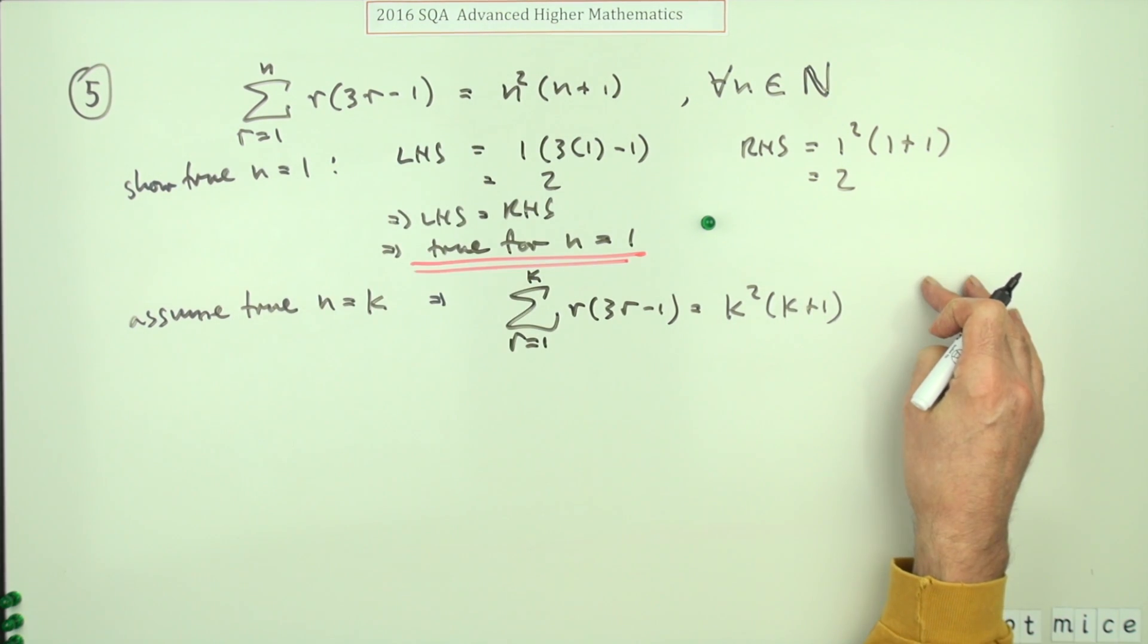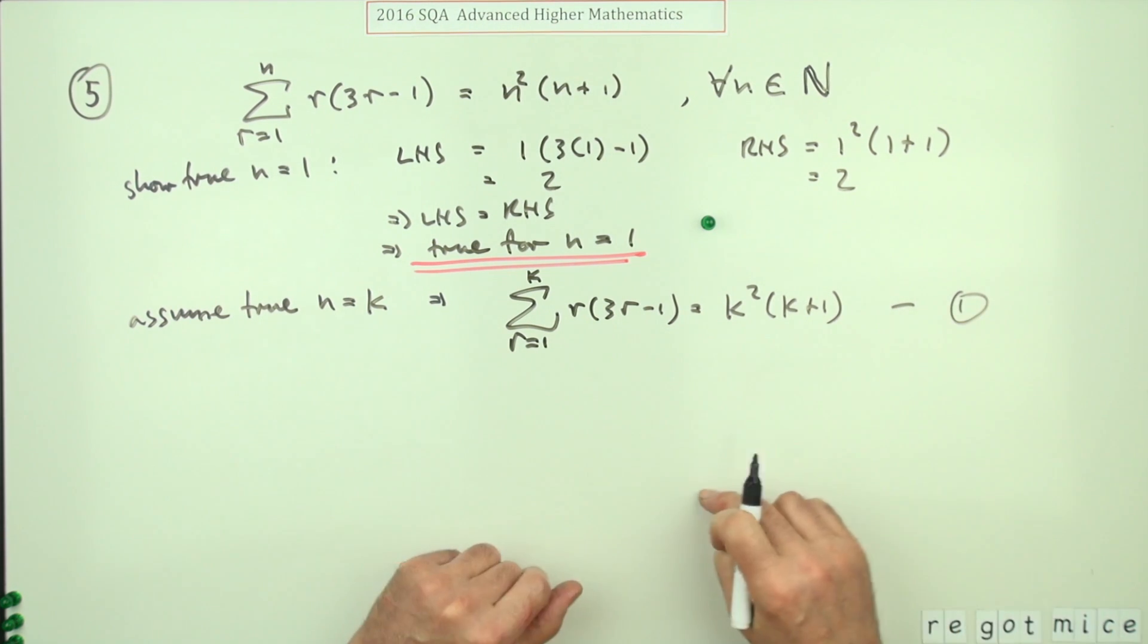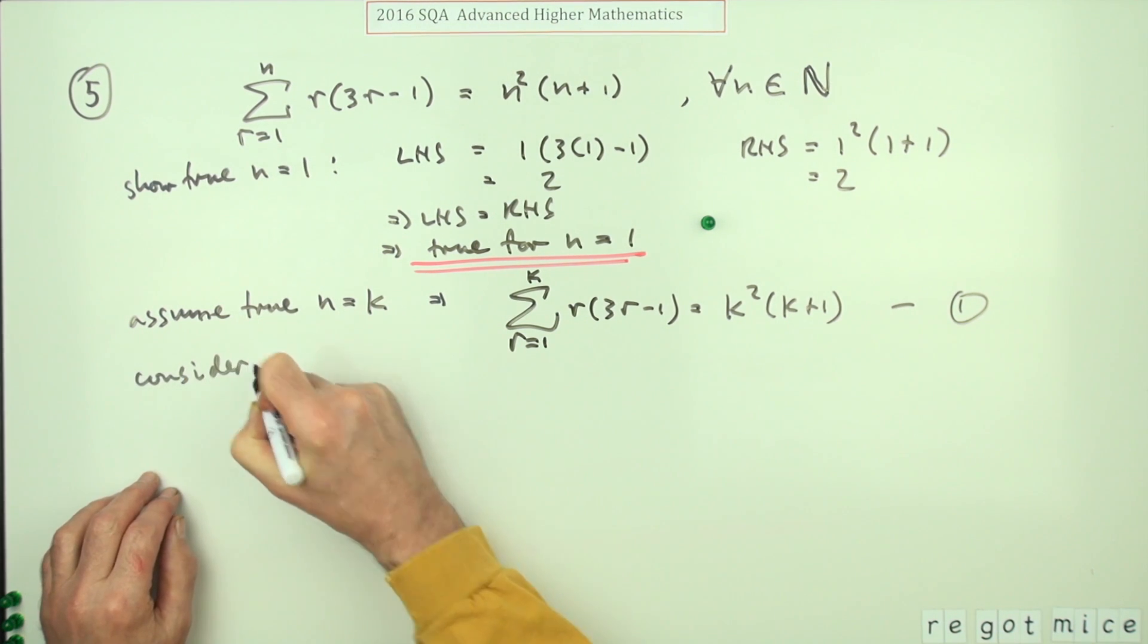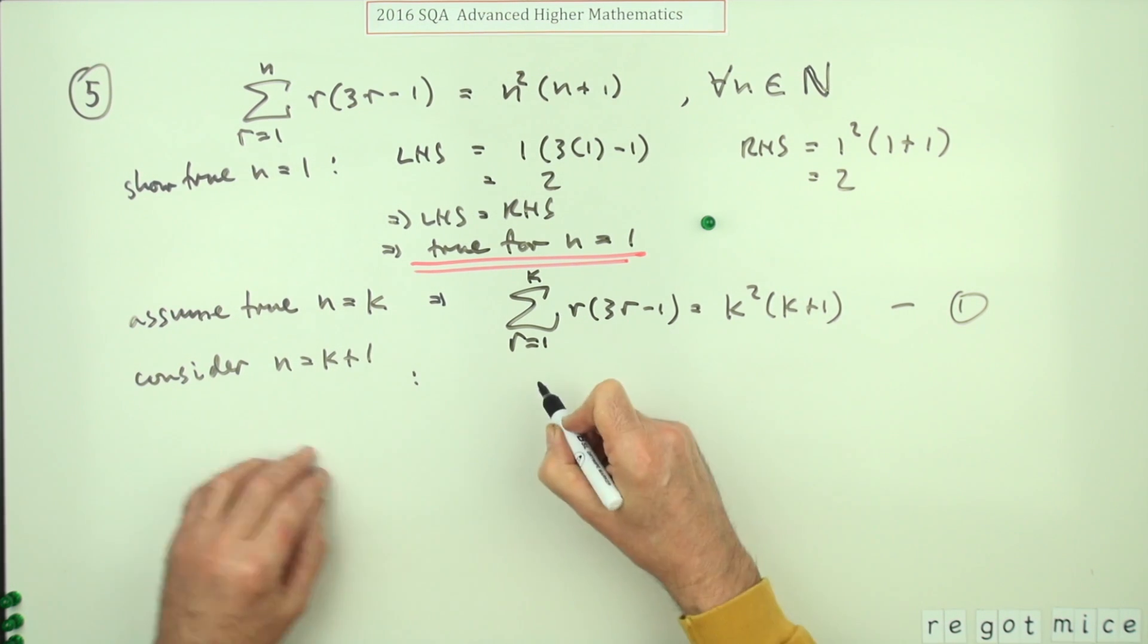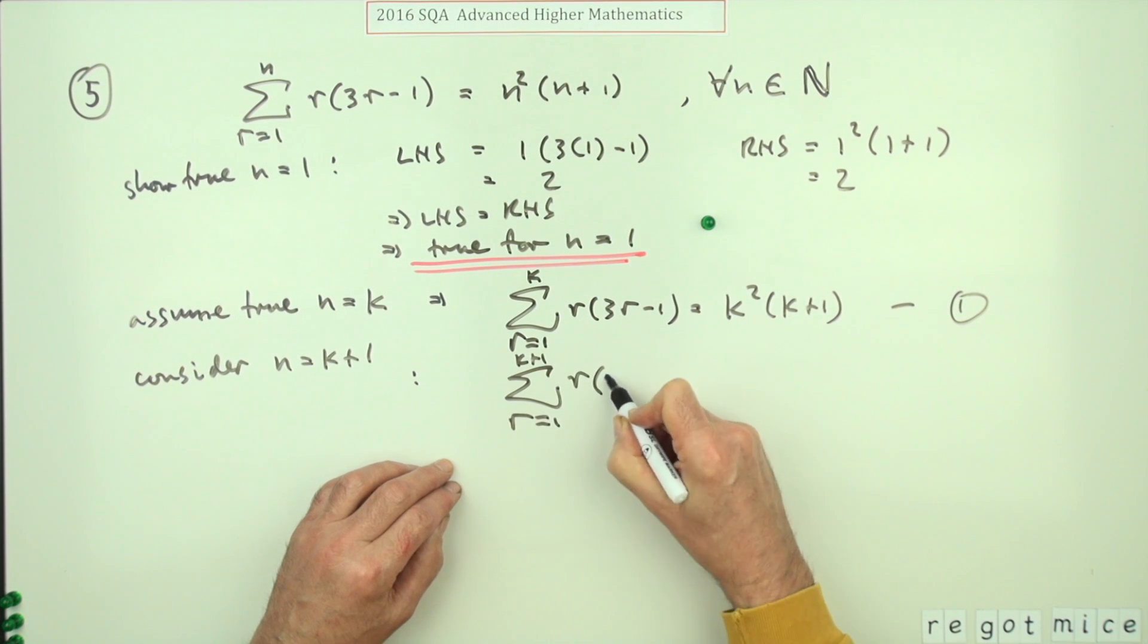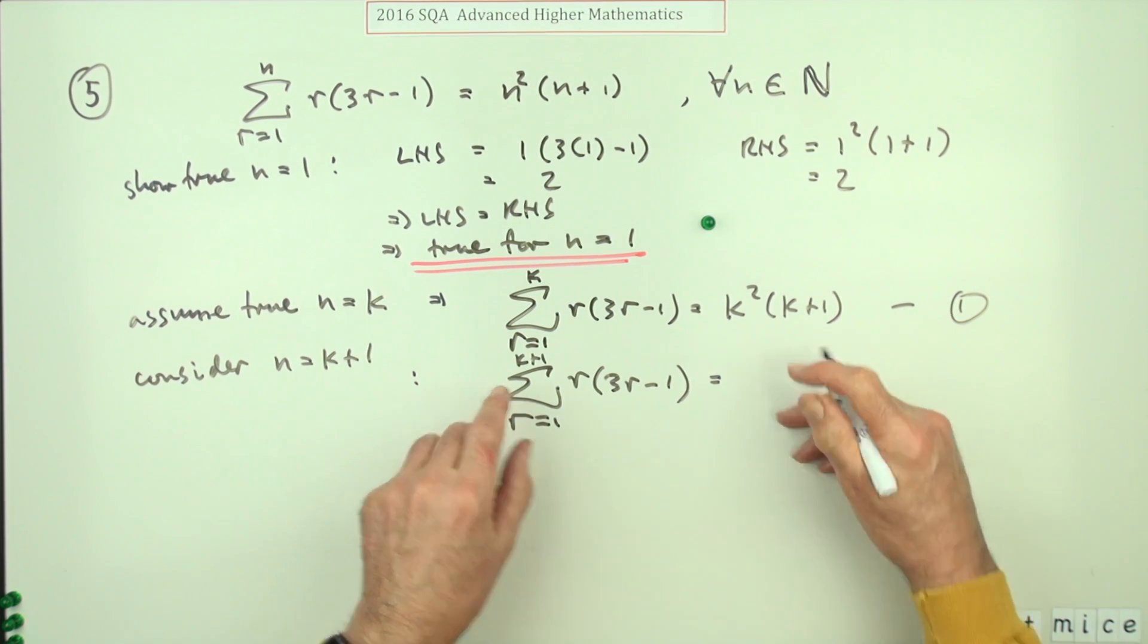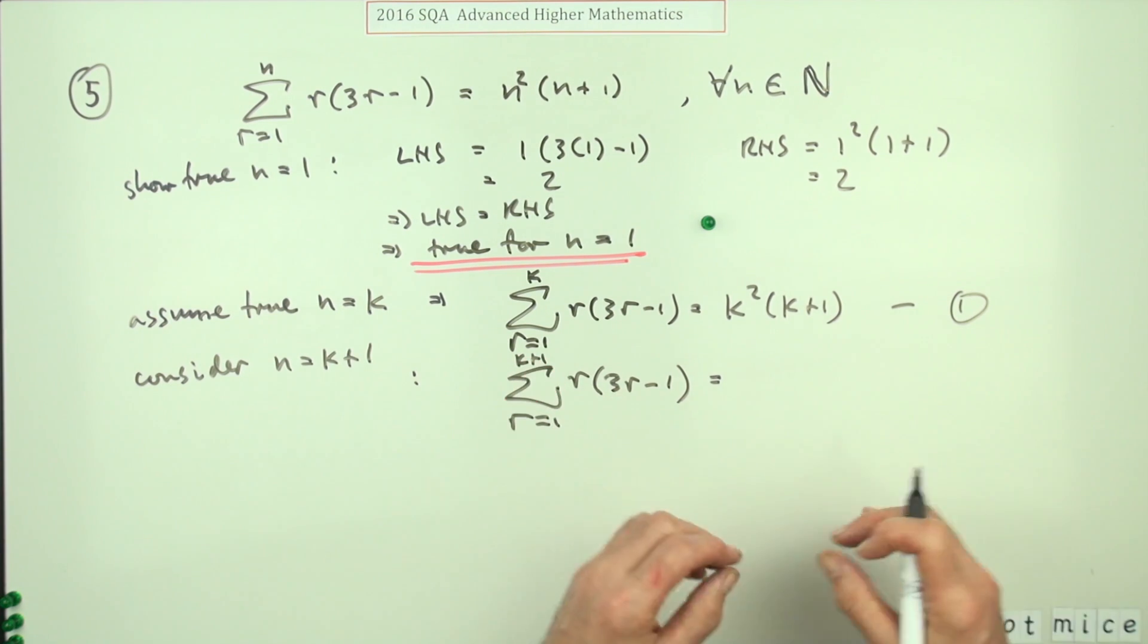Normally that would have been worth a mark. Then the next thing you do is give that a name because you have to call in your inductive hypothesis into the proof. Then the next thing is to consider what happens: consider n equals k+1, which means you're considering r equals one to k+1 of r(3r-1). But even yet you're not getting the mark until you've actually written out what this means. So it's a summation. If it's a summation, split it into two bits: the big bit and the extra part. If it's a product, you split into the big bit and the extra term multiplying it.